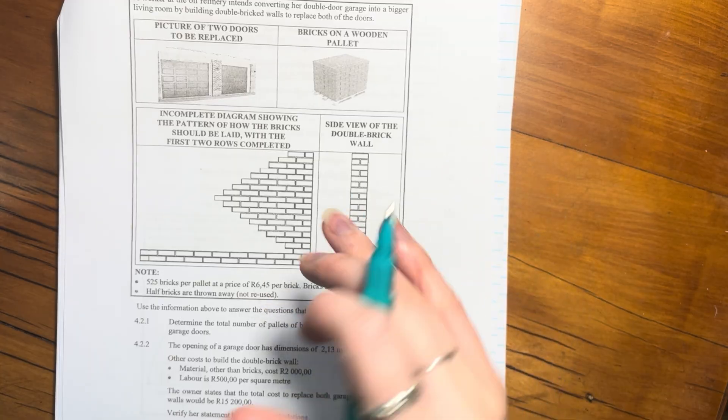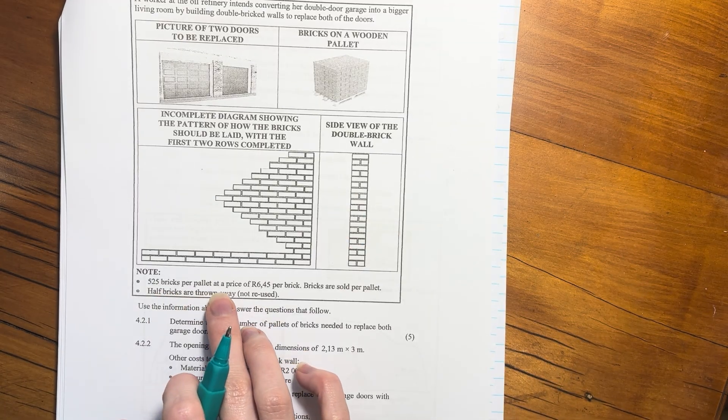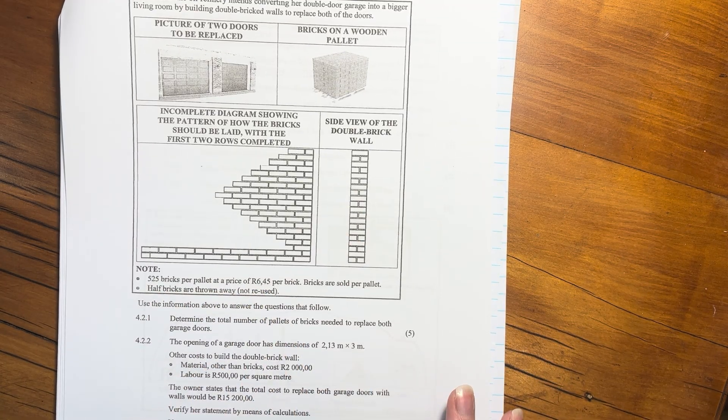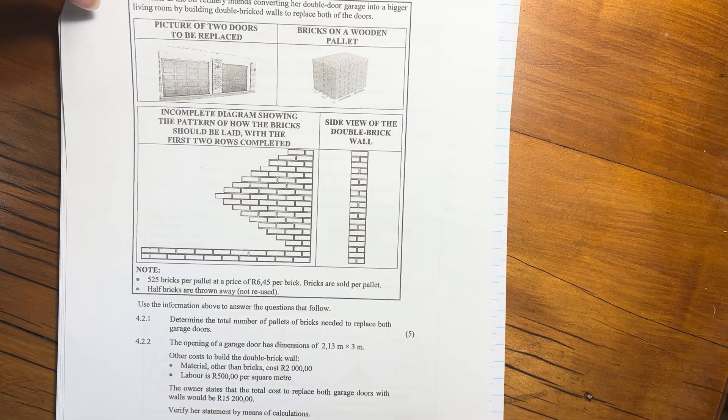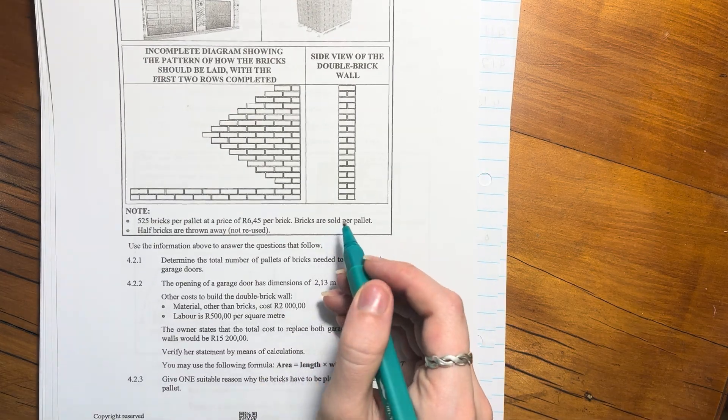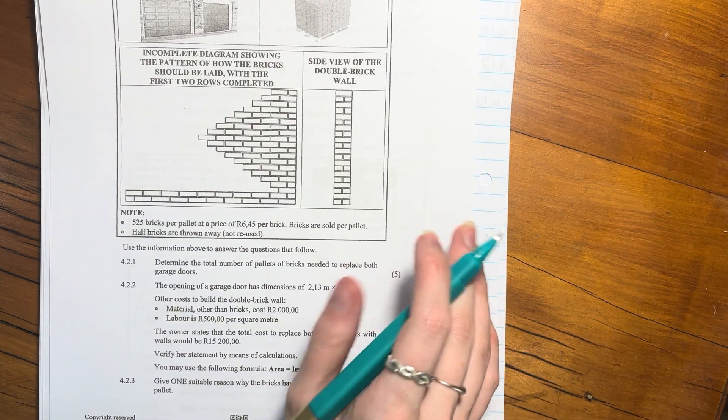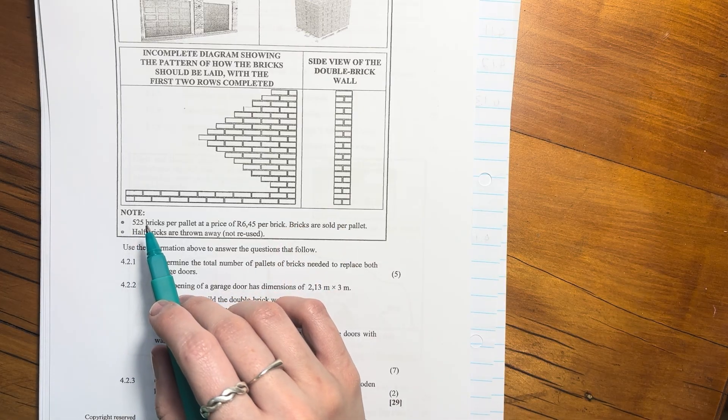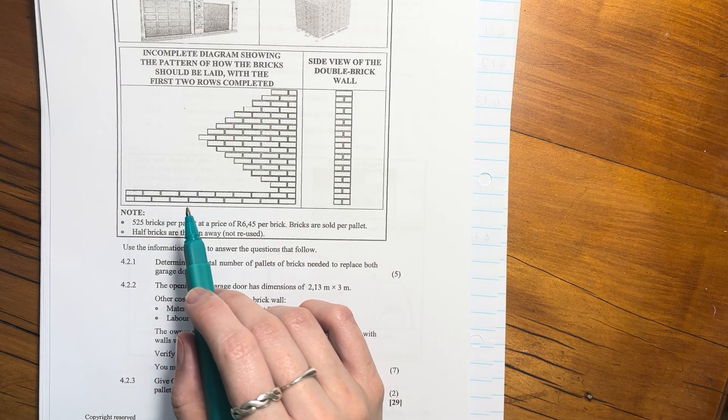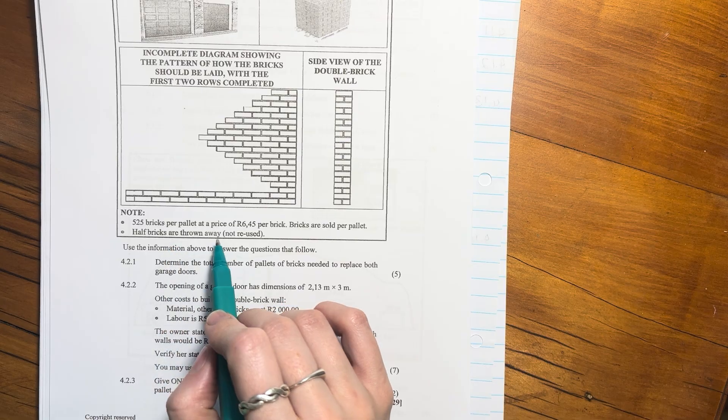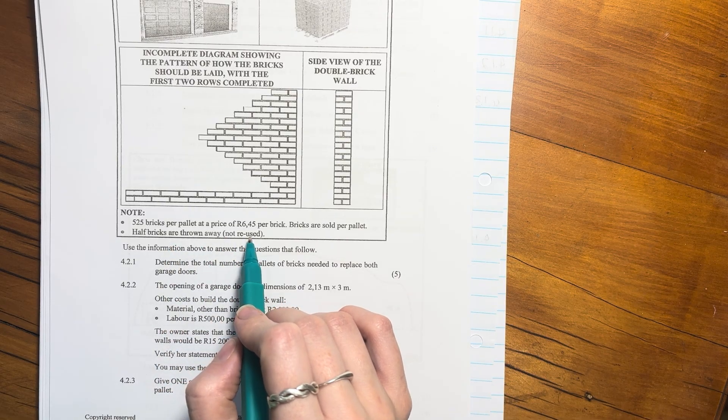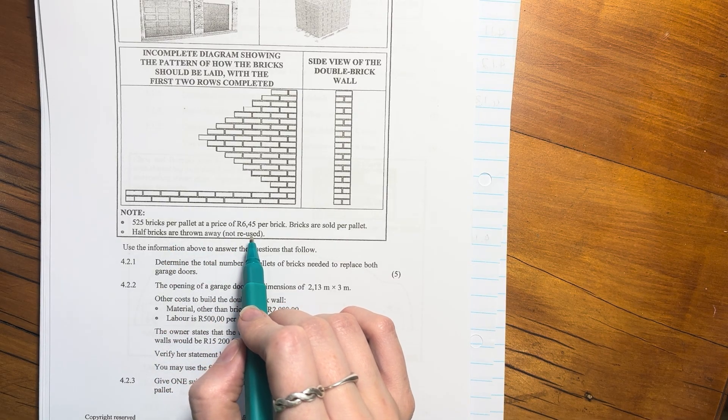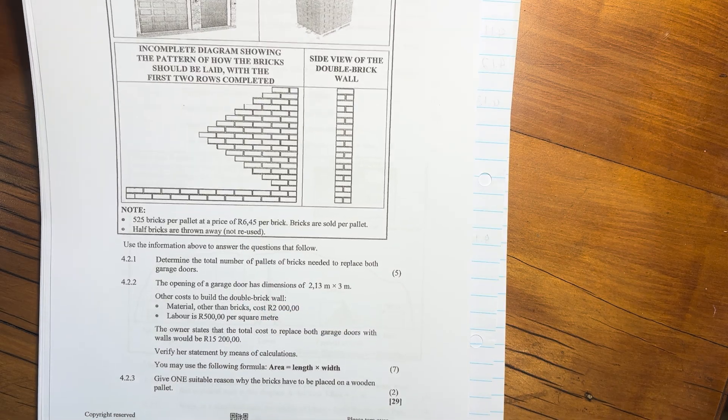525 bricks per pallet at a price of 6.45 per brick. Bricks are only sold per pallet, so you can't just buy 600 bricks, you have to buy two pallets of bricks. Half bricks are thrown away, not reused, so that's quite important to know.